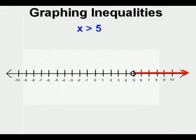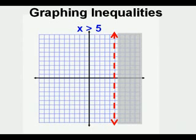Similarly, a single unknown inequality can also be graphed on a number line. This is the graph of x is greater than 5, or on a coordinate plane — this is also the graph of x greater than 5 but on a coordinate plane.